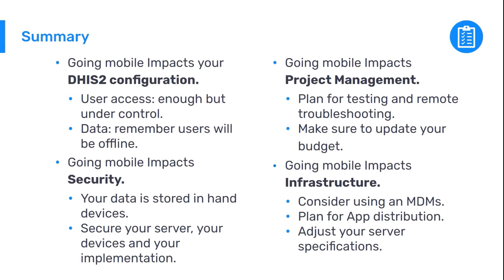To summarize this session: including the DHIS2 mobile app in an implementation brings many benefits and enables features not otherwise available. However, it comes with implications that need to be taken into account. These involve considering several actions from the project management perspective like budget, training, testing, and support; tweaking server configuration and adjusting hardware specifications; and analyzing and implementing security practices while using additional tools like MDMs.